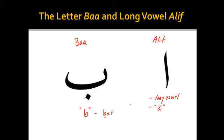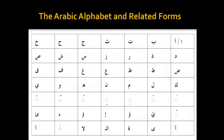Now let's look at our alphabet. So here we have the Arabic alphabet, and today we are discussing the alif — long vowel — and ba, the letter ba.